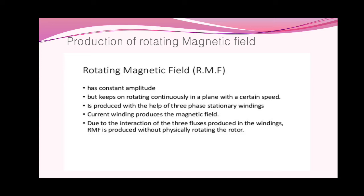Before going to see basic features: how rotating magnetic field will be produced — RMF will be produced if and only if two or more than two windings or phases are present. Because of a single phase or single winding we cannot produce rotating magnetic field, and because of this RMF the motor is self-starting; otherwise the motor will not start.